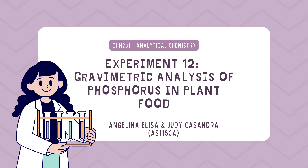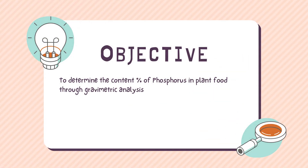Hi, we are from AS1153A, which are Angelina and Lisa and Judy Cassandra. We want to present an experiment conducted in analytical chemistry, which is Experiment 12: gravimetric analysis of phosphorus in plant food. The objective of this experiment is to determine the content of phosphorus in plant food through gravimetric analysis.